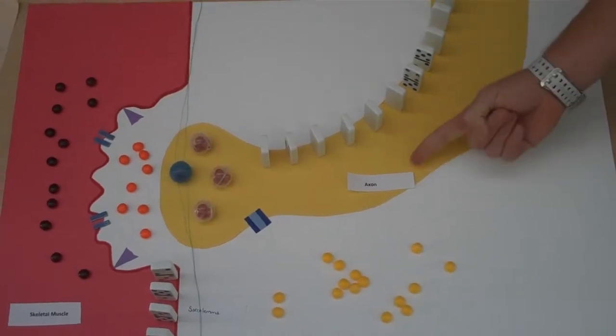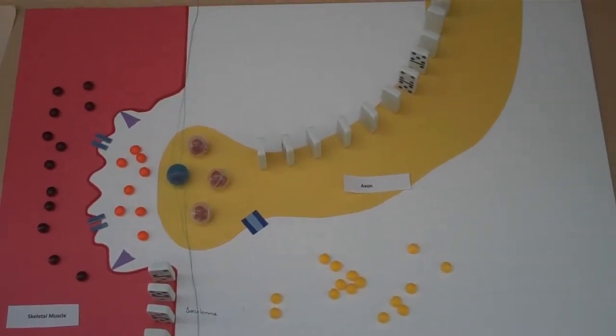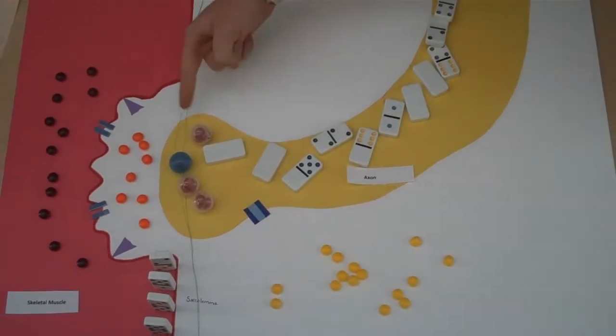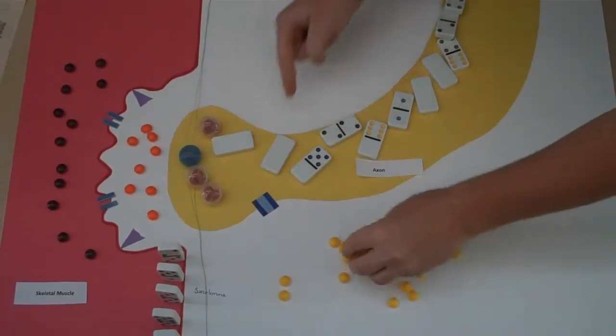The axon of a neuron propagates an action potential. When it reaches the synaptic knob, the calcium channels open, allowing calcium to flow in.